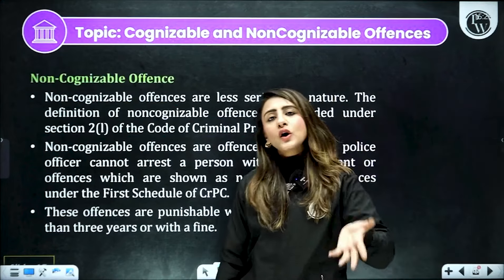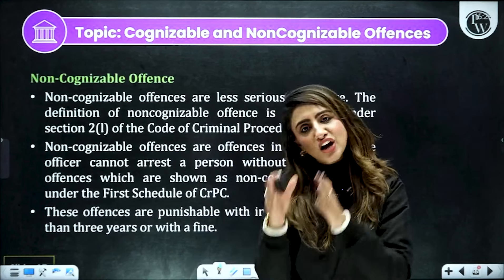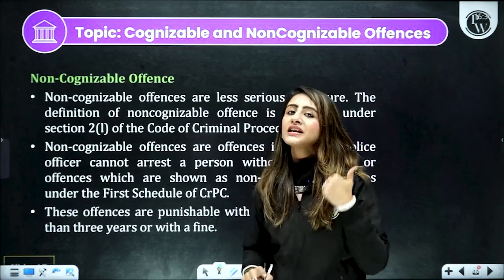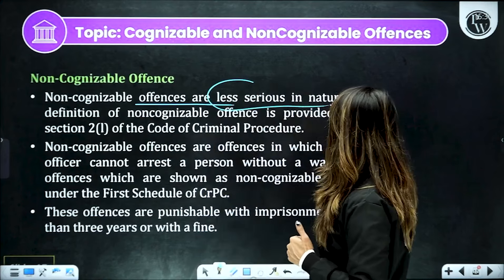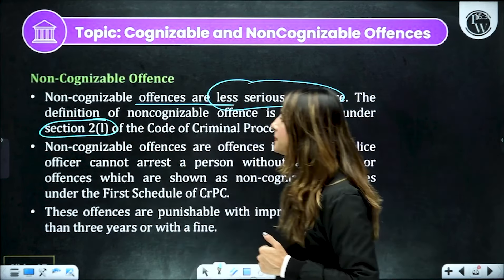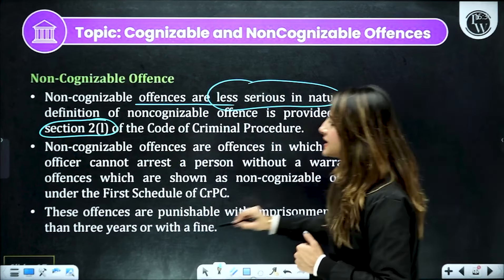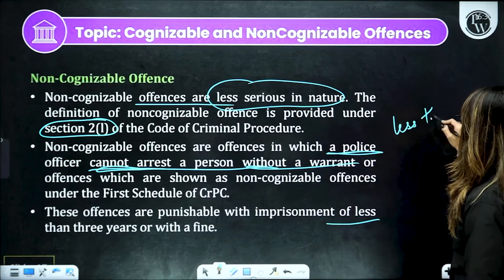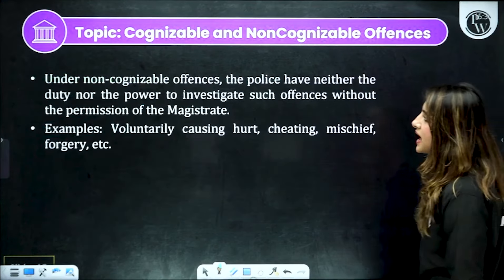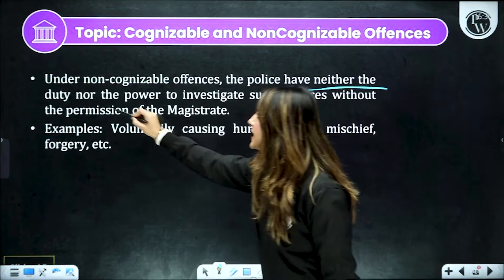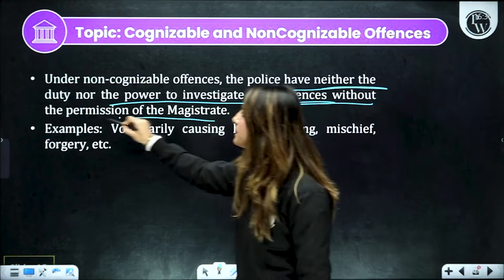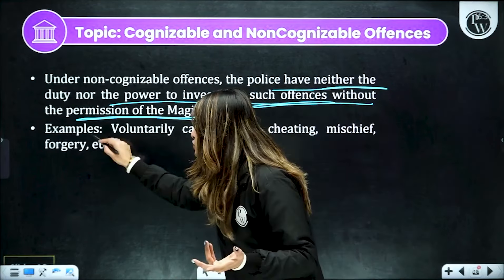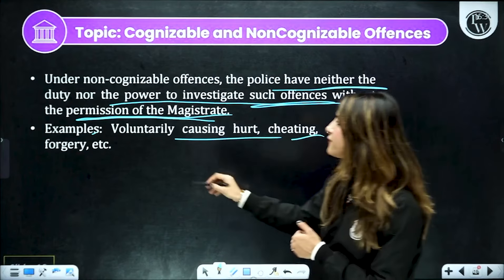Ab baat karte hain non-cognizable — toh yeh uska ulta ho gaya. Non-cognizable mein police ko arrest karne ke liye warrant chahiye hi hoga. Saath hi, police investigation nahi shuru kar sakti jab tak magistrate ne order nahi diya. Toh non-cognizable offenses less serious offenses hoonge, jaise section 2(1) CrPC mein mention hai. Non-cognizable offenses mein police cannot arrest without a warrant. Aur ismein saare woh offenses ho jaenge jinnki punishment hoti hai less than 3 years — toh yeh aapke petty offenses mein aajate hain. Police cannot investigate the offense without the permission of the magistrate — the police cannot start the investigation jab tak magistrate unko command ya permission nahi de deta. Yahaan par kuch examples hain — like voluntarily causing hurt, cheating, mischief, forgery, etc.